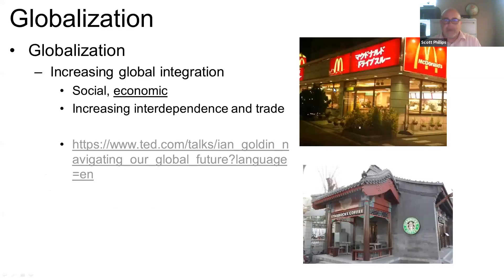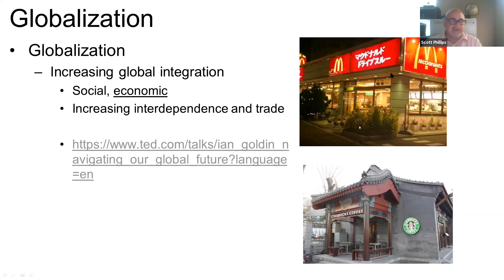Let's talk about some of the current challenges and circle back to population and food supply in a moment. I want to introduce the concept of globalization — the increasing integration among places, where the world has become a smaller place over time through social and economic connections, showing American brands in other countries. We become much more interdependent in terms of trade and our economies, so economic problems in one part of the world send shockwaves to other parts. We'll be talking about globalization throughout the course.